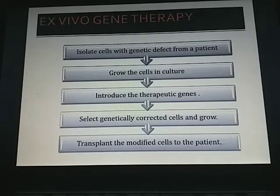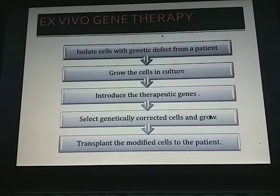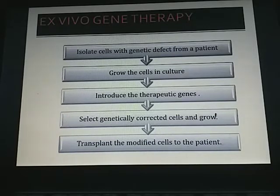In ex vivo gene therapy, defective cells are first isolated from the patient and grown in culture. Therapeutic genes are introduced into the culture, modifying the cells. Genetically corrected cells are selected and grown separately in culture, then the modified cells are transplanted back into the patient to correct the disorder.